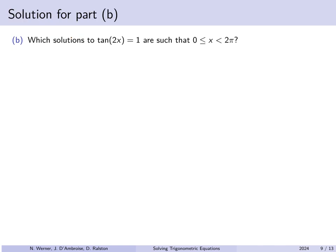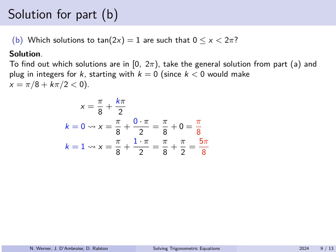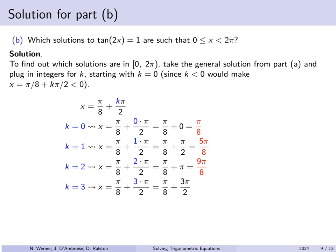We now ask which of those x's are between 0 and 2π. All possible x's are of the form π/8 + kπ/2, and we check which values of k give a result in [0, 2π]. For k = 0, we get π/8 — valid. For k = 1, we get 5π/8 — valid. For k = 2, we get 9π/8 — valid. For k = 3, we're still in range. For k = 4, we'd have π/8 + 2π, which is bigger than 2π, so we stop.